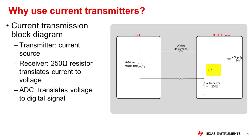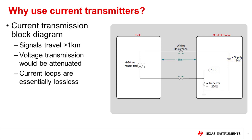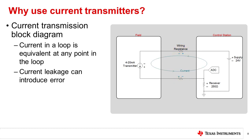The receiver in this case is a 250 ohm resistor that turns the transmitted current back into a voltage at the control station. This voltage can be translated to a digital signal for processing using an analog to digital converter. Transmission from the field sensors to control station or control station to field devices can be done with as little as two wires. The configuration in this example is a two-wire system that uses a 24-volt nominal loop supply. Sense and control signals must often travel distances of a kilometer or more. If a voltage transmission was sent over a kilometer-long wire, the voltage drops due to the impedance of the wire would cause enough attenuation to render the arriving signal unusable. 4 to 20 milliamp current loops are essentially lossless, even at long distances, since the voltage drop caused by the long transmission wires does not impact the accuracy of the current signal. Kirchhoff's current law states that the current in the loop is equivalent at any point in the loop. So if a current of 8 milliamps is read at a receiver, the current in the transmitter a kilometer away must also equal 8 milliamps. Ideally, the resistance between these two wires is infinite, but a non-ideal resistance between the wires can cause current leakage paths that add some error to the system.